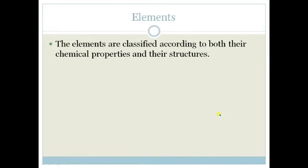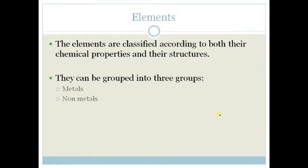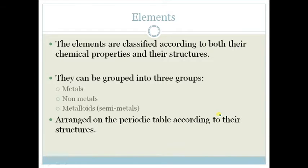Elements are classified according to their chemical properties and structures. They can be grouped into metals, non-metals, or metalloids, which are also called semi-metals. They are arranged in the periodic table according to their structures.